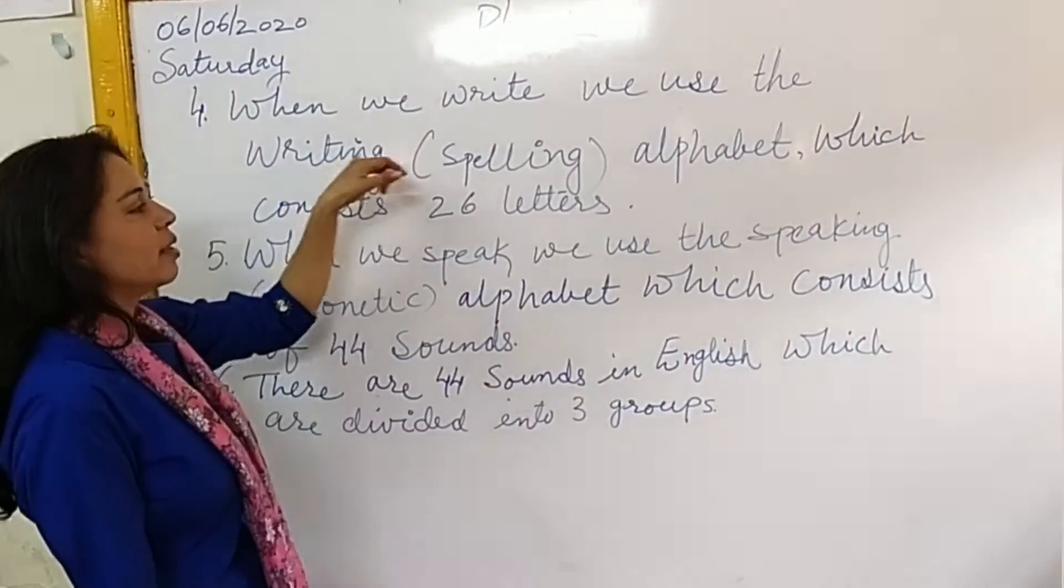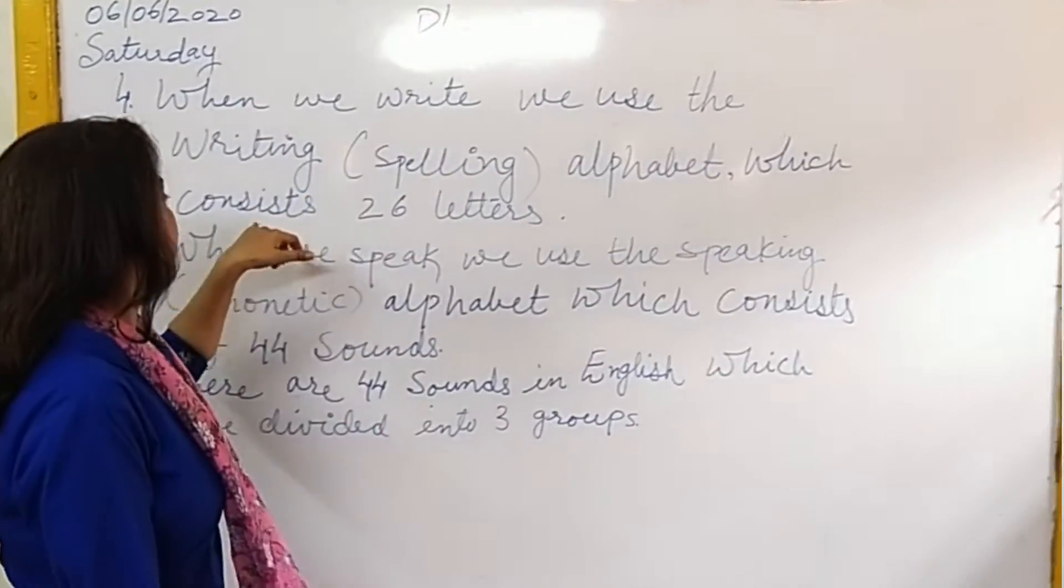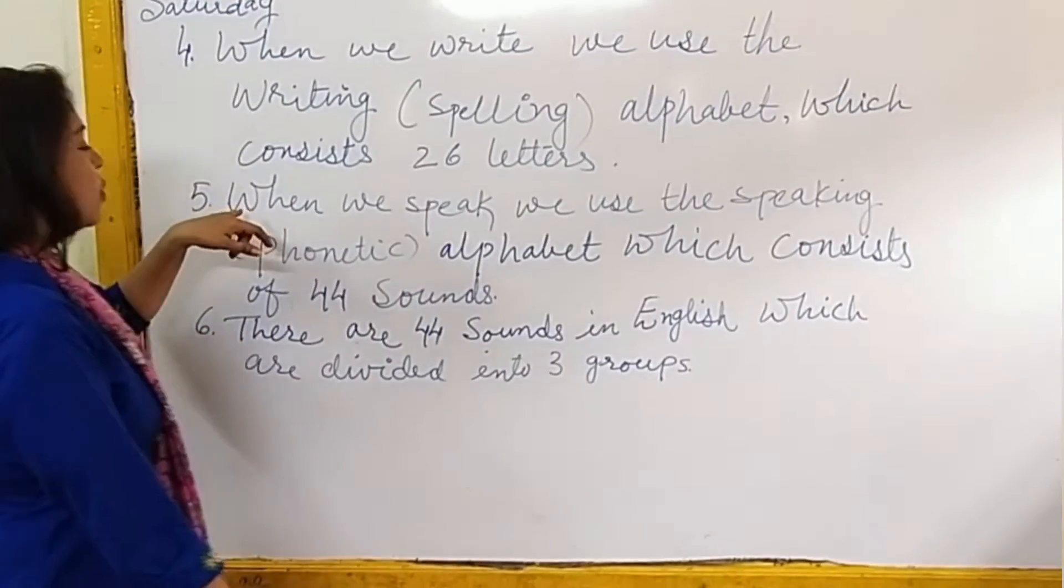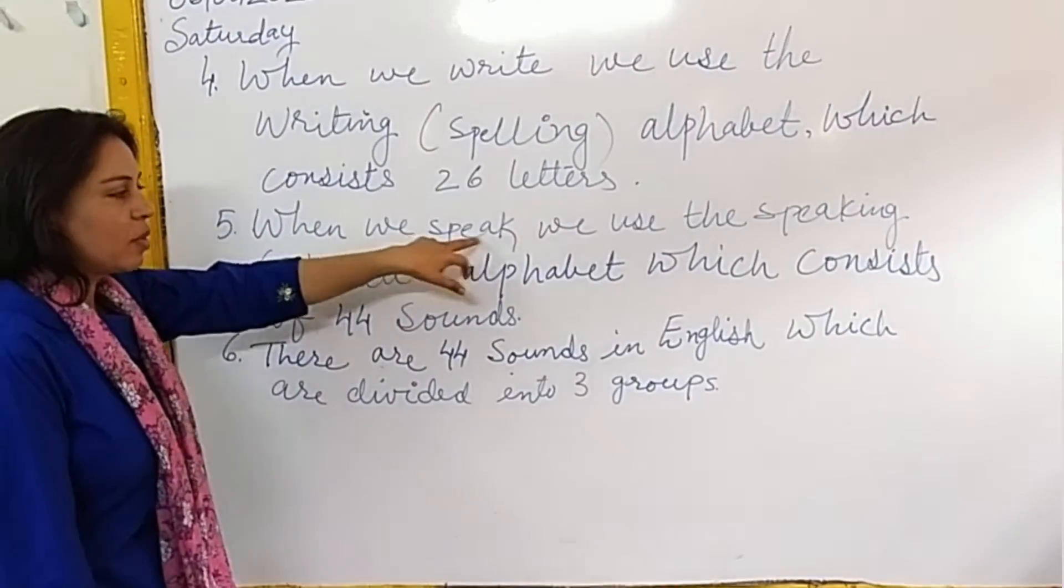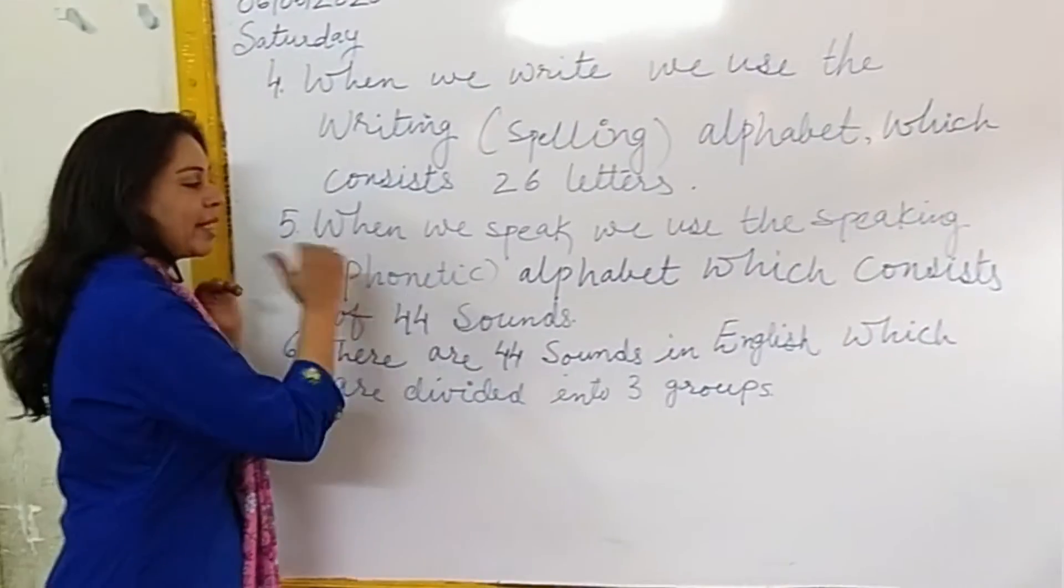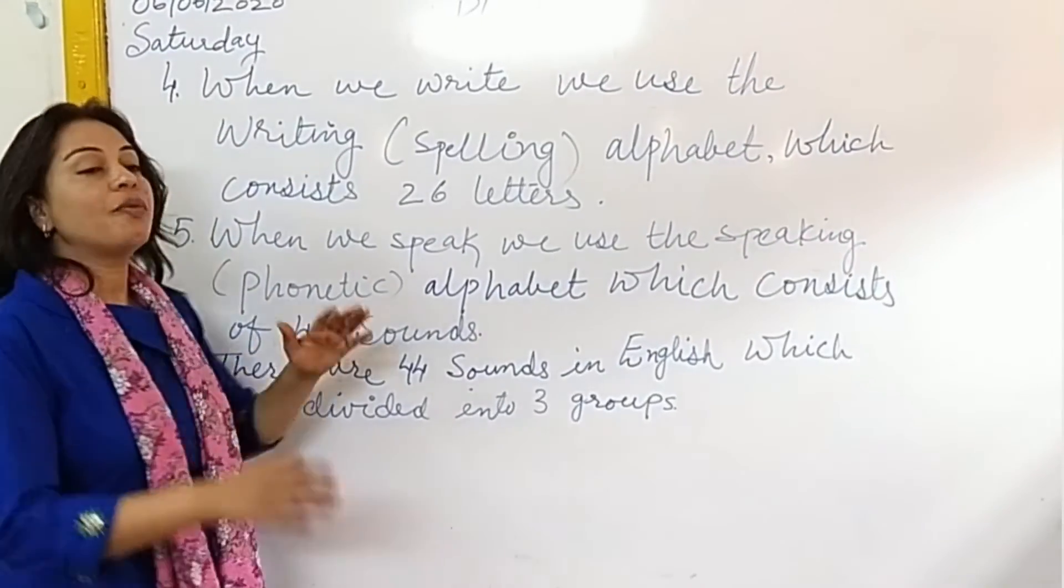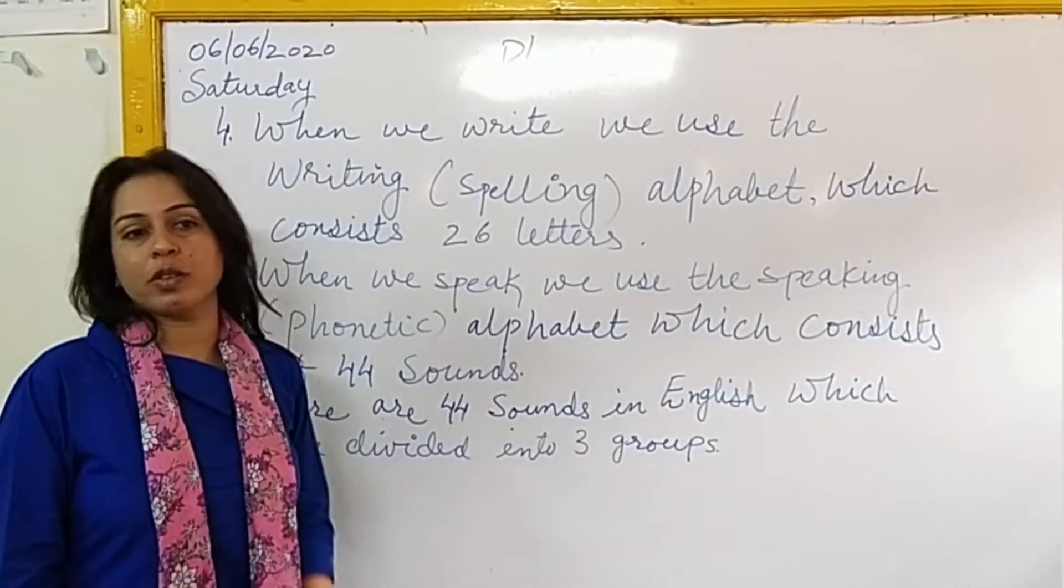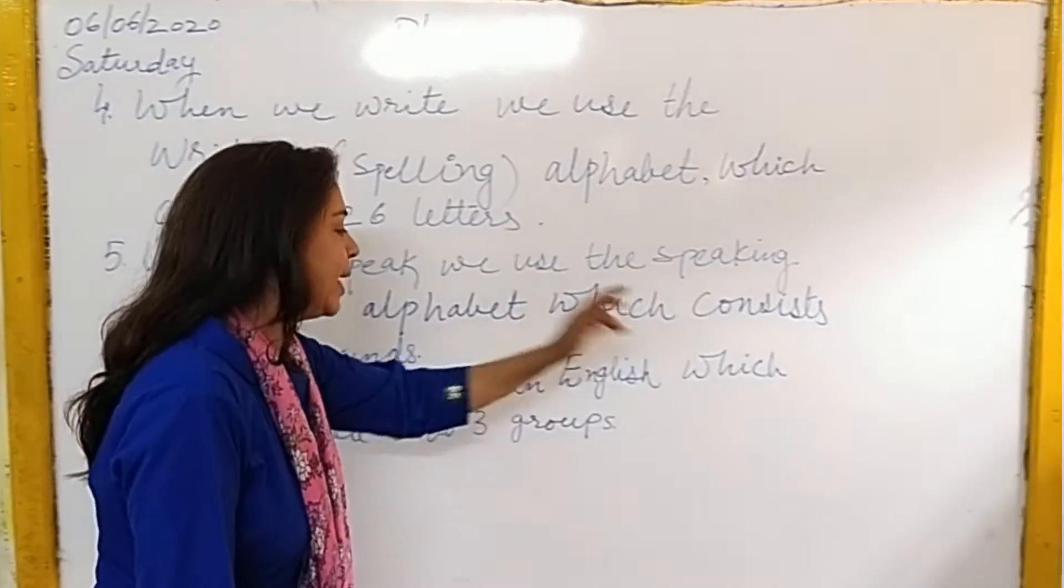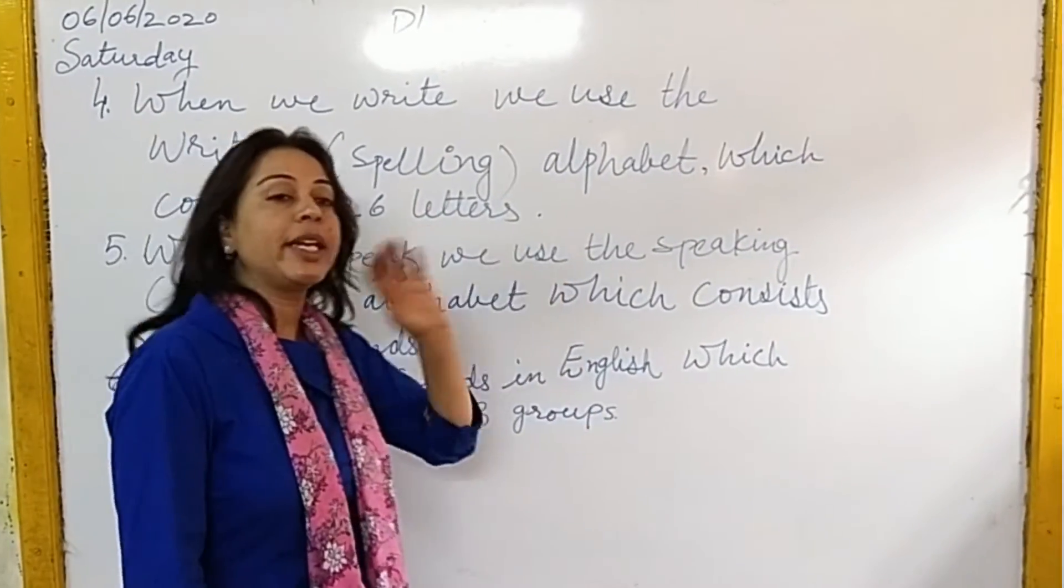Now fourth point is, when we write, we use the writing, that is style alphabet which consists of 26 letters. When we speak, we use the speaking, that is phonetic alphabet which consists of 44 sounds. And there are 44 sounds in English which are divided into three groups.